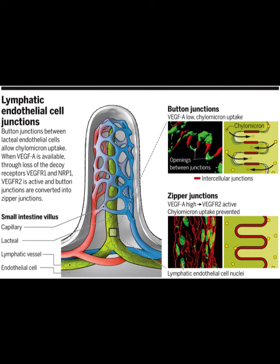The lymphatic system transports dietary proteins, eliminates waste, and transports lipids and lipid-soluble vitamins A, D, E, and K from the digestive tract to the blood. These lipids and vitamins are too large to be transported by blood capillaries, so instead they are transported by specialized lymphatic capillaries called lacteals, located in the small intestine.